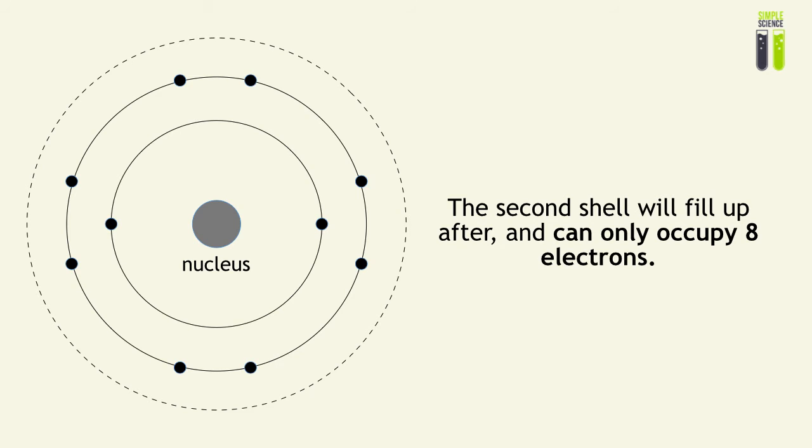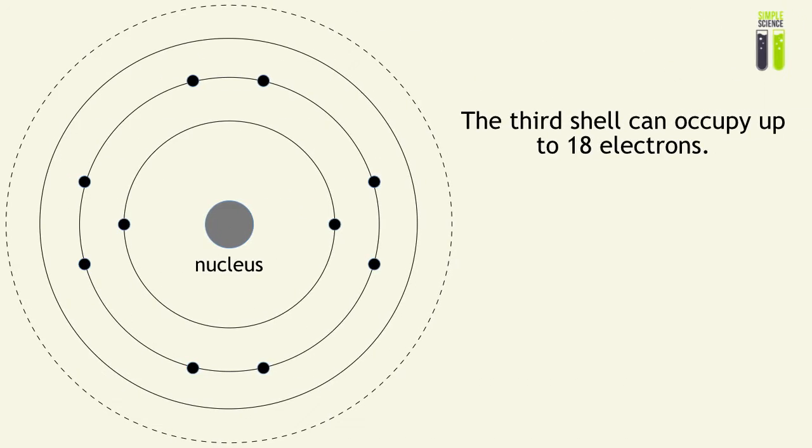Now the third shell will get a little bit more complicated because it can occupy up to 18 electrons. Now that is a crowded area. So we must see how they are distributed.